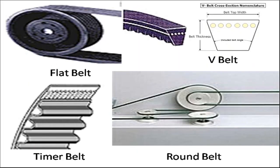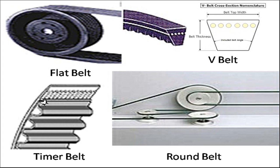There are different types of belt cross sections. The flat belt has a rectangular cross section. The V-belt has a trapezoidal cross section, with a top width, belt thickness, and included V-belt angle. The timing belt has a flat top surface with teeth on the inside, and corresponding cavities on the pulley to mesh with those teeth. The round belt has a circular cross section.